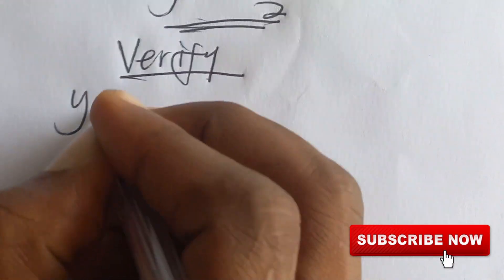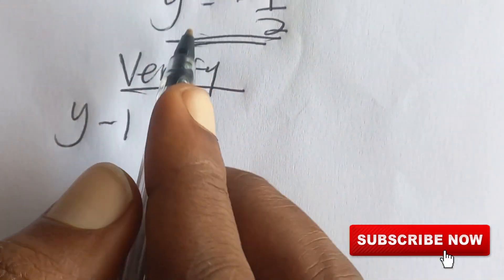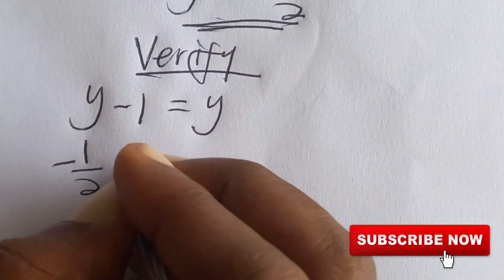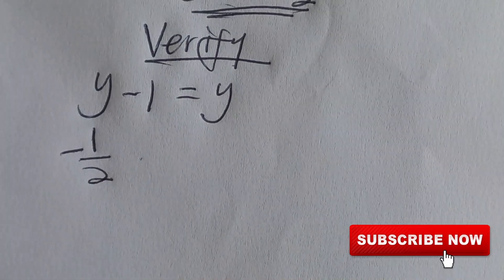We have y minus one is equal to y. So we have y to be negative half, so negative one on two, okay, sorry.